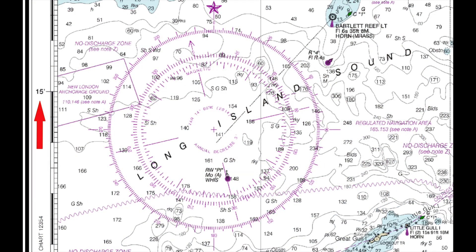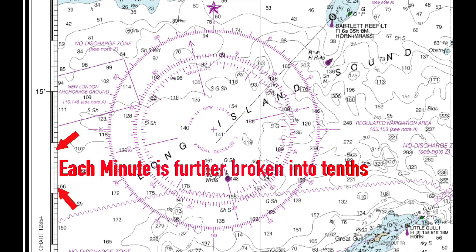On both the latitude and longitude scales, minutes are shown as a two-digit number followed by an apostrophe. Each minute is further broken down into tenths of minutes. Since one minute of latitude is equal to one nautical mile, a tenth is equal to one-tenth of a nautical mile, five-tenths is half a nautical mile, and so forth.